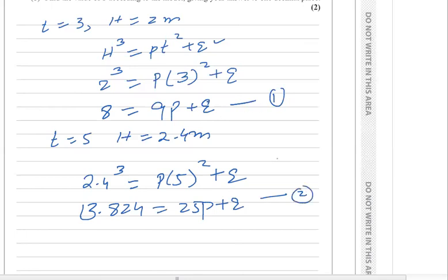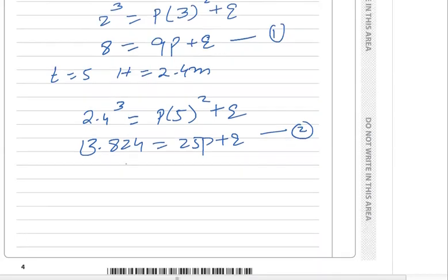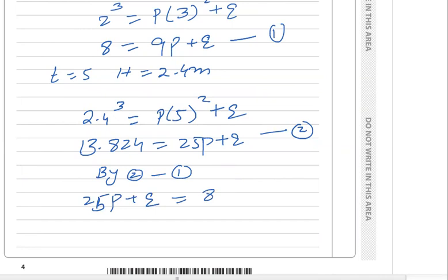Solving equations one and two simultaneously: subtract equation one from equation two. The coefficients of q are equal so q eliminates. Equation two minus equation one gives: 25p + q = 13.824 minus 9p + q = 8.